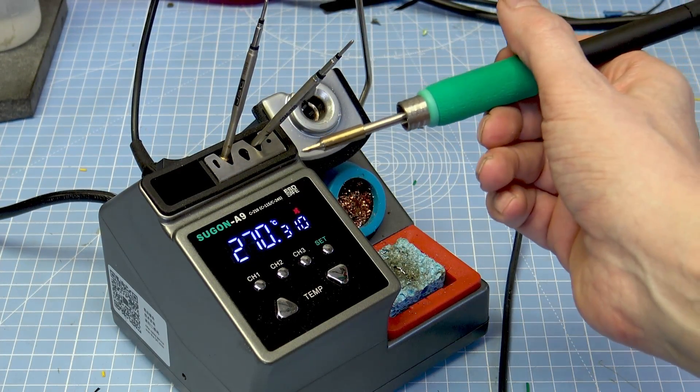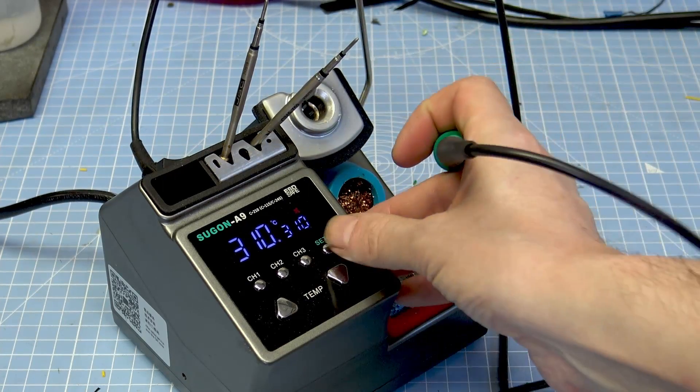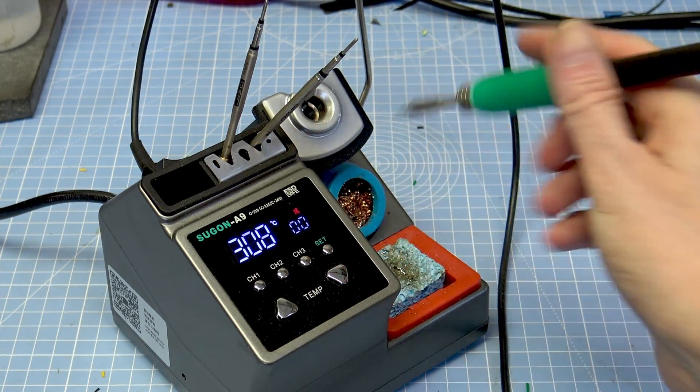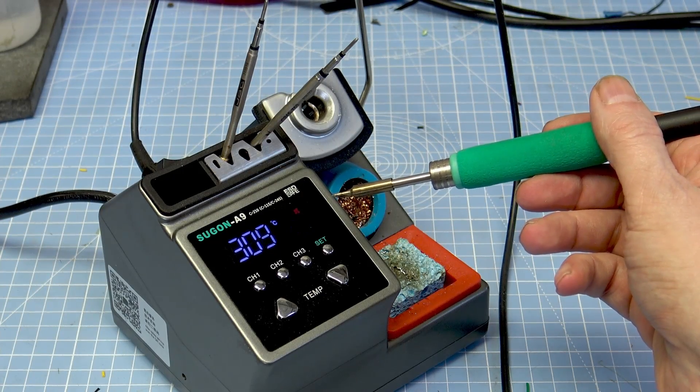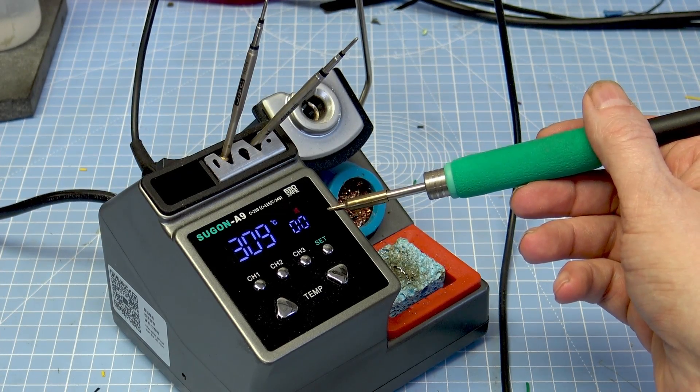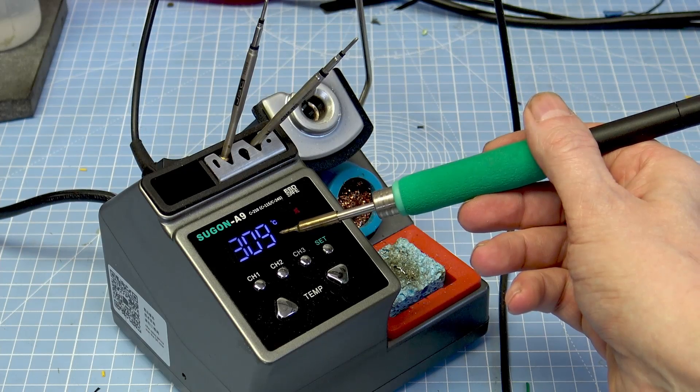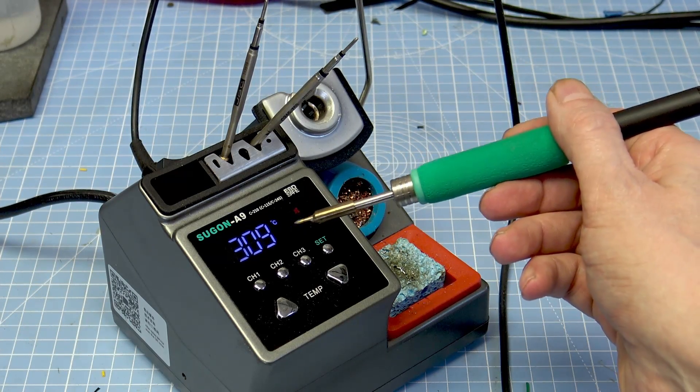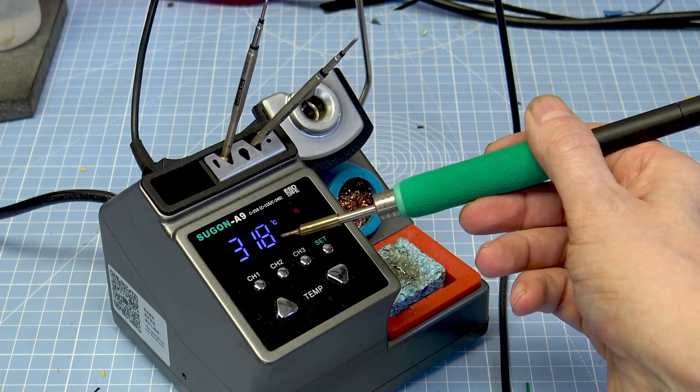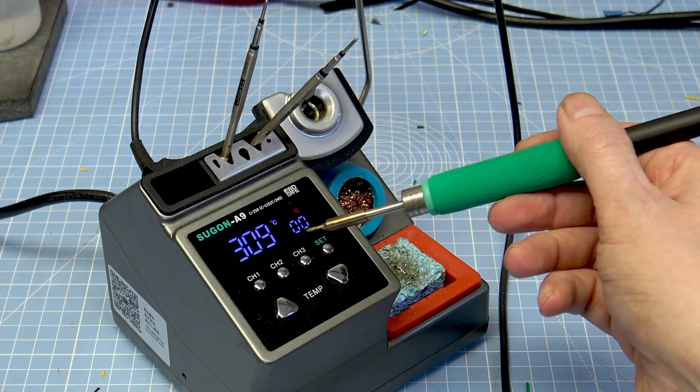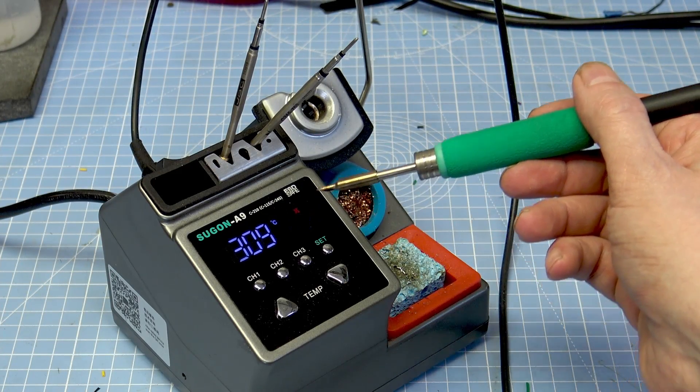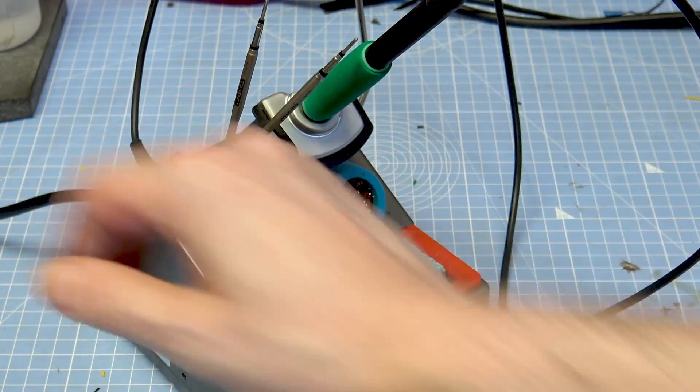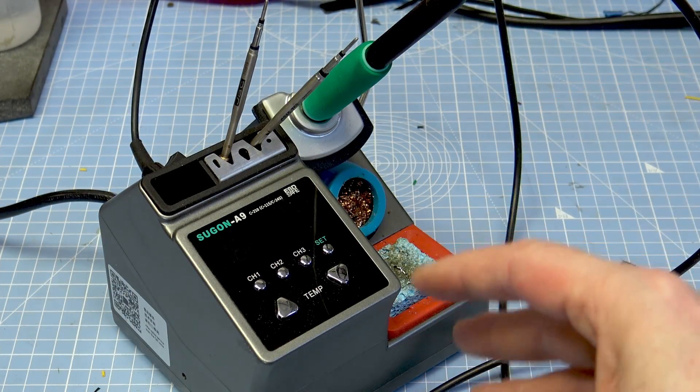When we do that same routine, press set to enter the calibration. You can see that the temperature range is a lot bigger than the original JBC. So 318, so we're going like plus 10, plus 11, plus 12. So that is why I'm saying to go with the original JBC tips. They will last a lot longer as well.